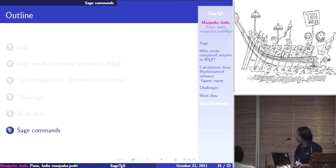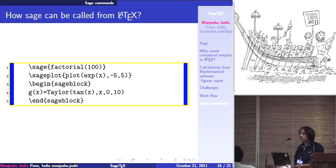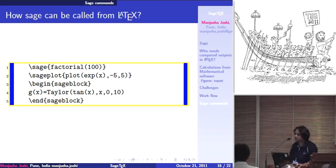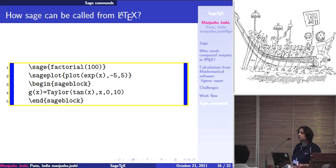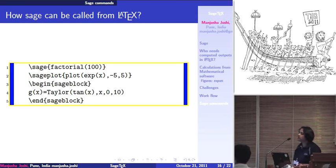Here are some commands just to give an idea. If you say backslash sage with curly braces, and the actual command — so factorial(100) is the actual Sage command — backslash sage allows you to enter into a Sage environment. That is the only single command which is enough to generate the factorial of 100, and not only that, it will get included in your TeX file.